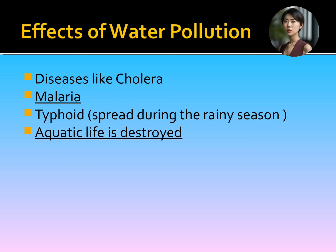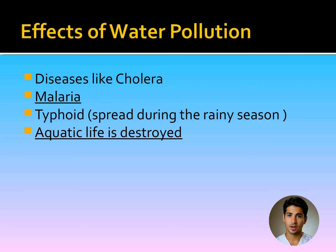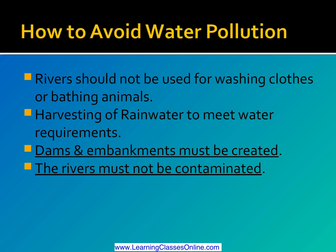Water pollution severely affects aquatic life — diseases like cholera and malaria spread and aquatic ecosystems suffer. To avoid water pollution: rivers should not be used for washing clothes or bathing animals, rainwater harvesting should be practiced, dams and embankments must be created, and rivers must not be contaminated.